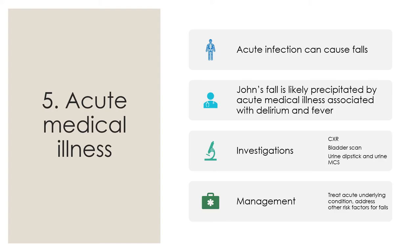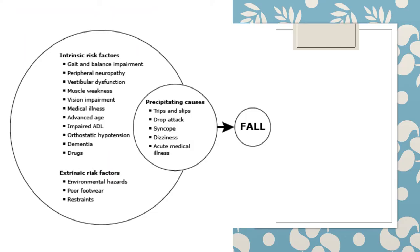So what have we covered through our cases? First, the catheter case — an extrinsic risk factor due to environmental hazards and restraints. Then syncope as a precipitating cause. With the Parkinson's patient, the fall is due to intrinsic risk factors such as gait and balance impairment as well as orthostatic hypotension. The polypharmacy patient has intrinsic risk from dementia and polypharmacy. And lastly, the acute medical illness — urinary tract infection — which can precipitate a fall.